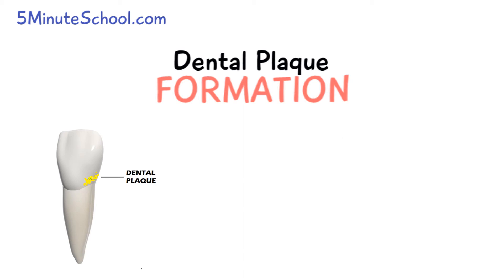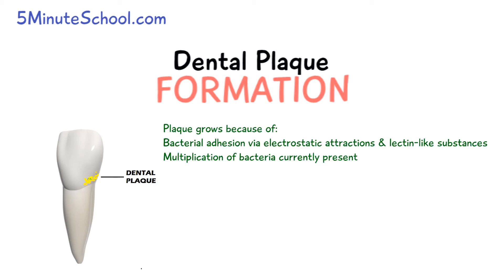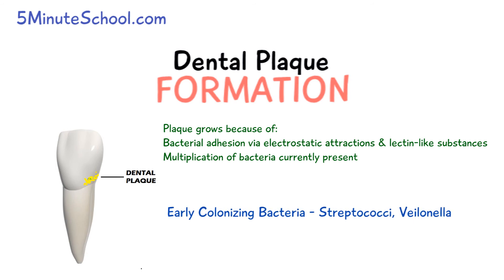Some of the methods of bacterial adhesion include electrostatic interactions and lectin-like substances. The initial bacteria present in the plaque during early stages of plaque formation are the Streptococcus species, followed by species like Veillonella. The later colonisers of dental plaque include Porphyromonas gingivalis and Prevotella.